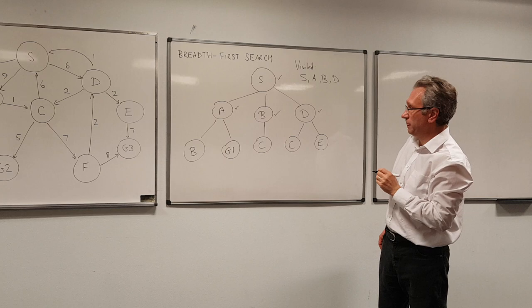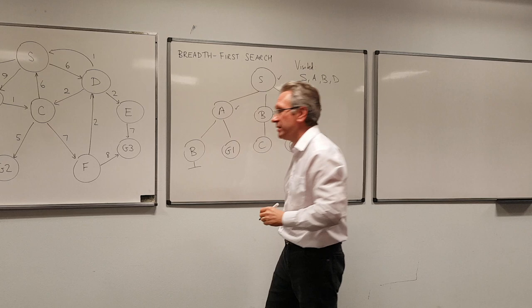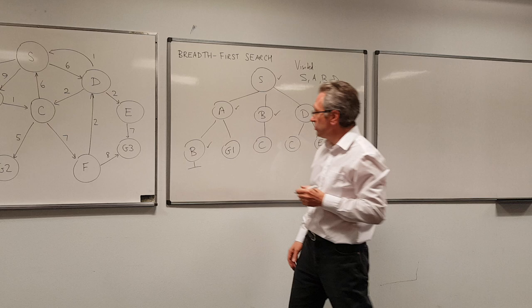Now when we get down to node B here, we notice it's already on the visited list. It's already been examined. So we treat this as a dead end. There's no need to expand that node. The reason is that we've already got it in the tree at the same depth or somewhere higher up. And now we get to node G1, and that's the goal.